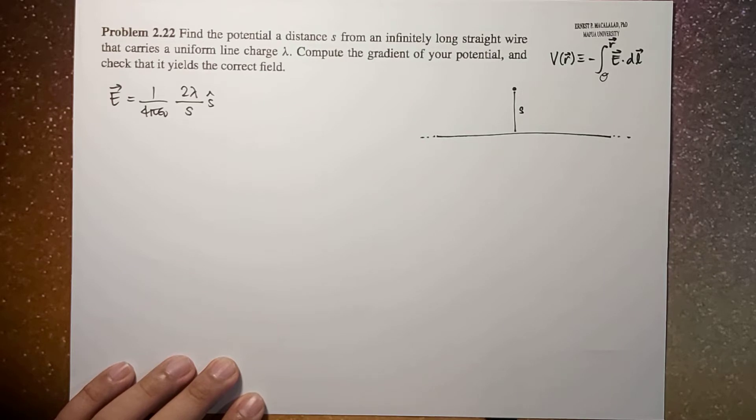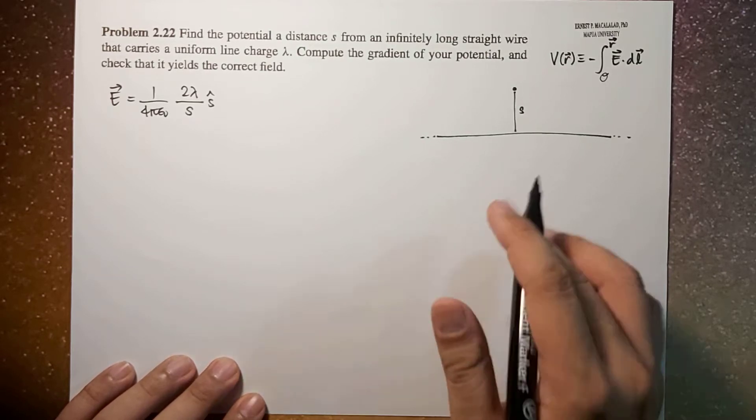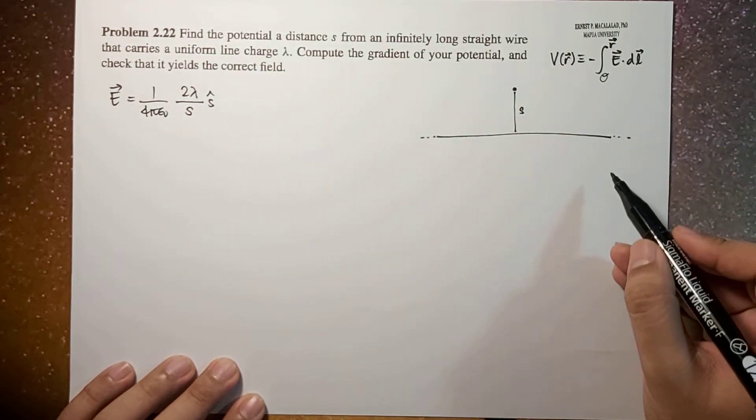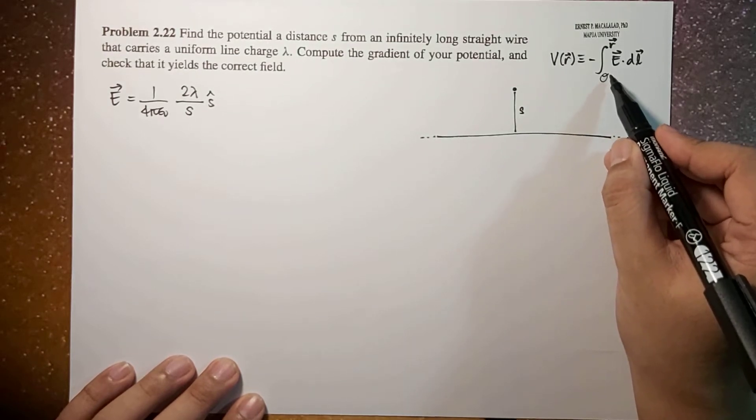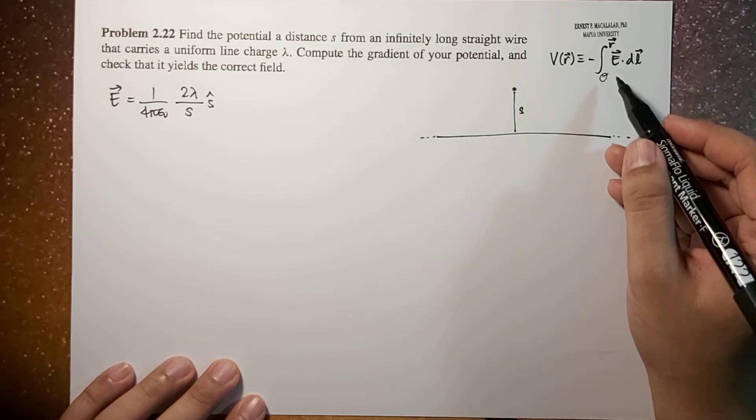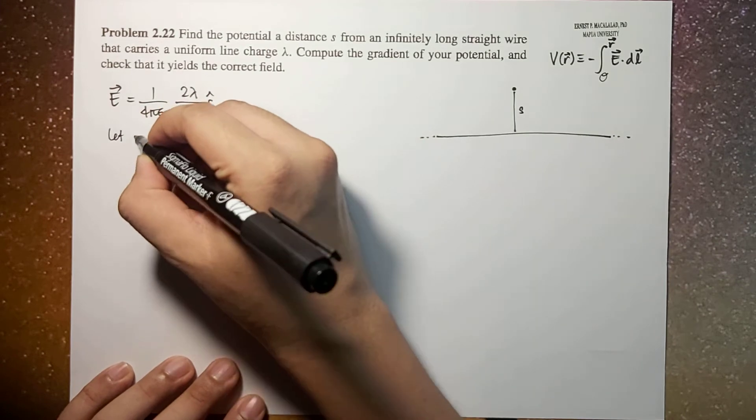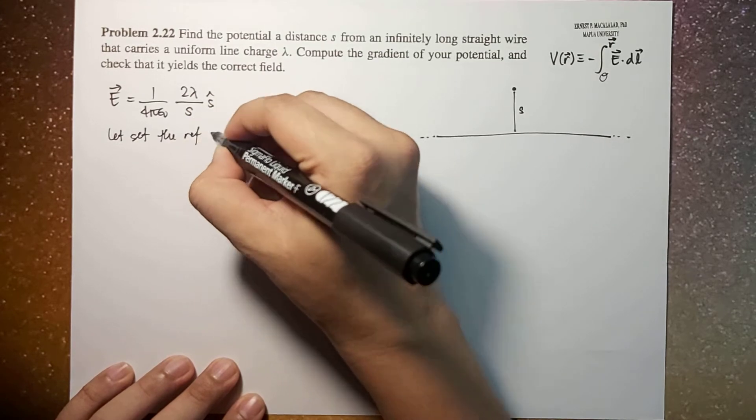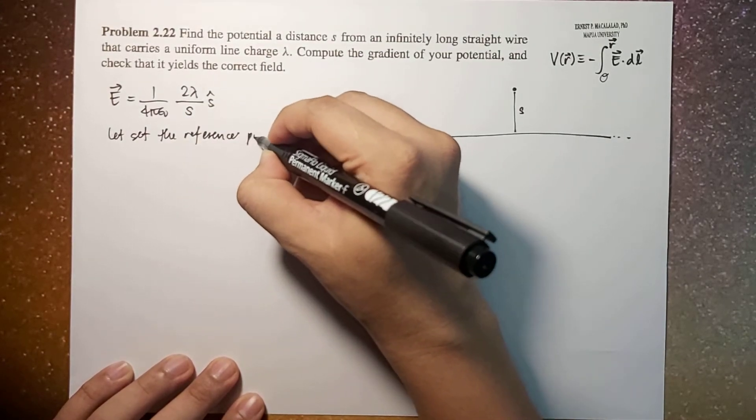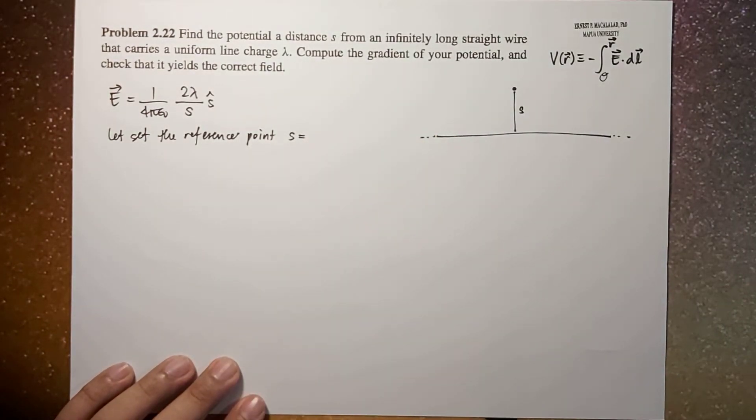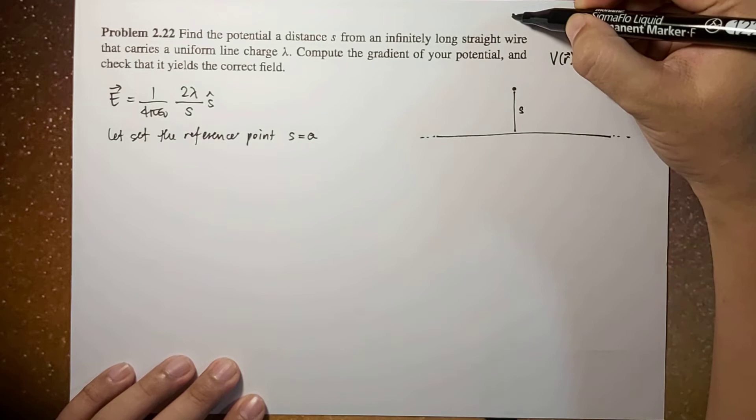Now since the line extends to infinity, definitely we cannot use infinity as our reference point, which we're going to show mathematically later. Now let's say we set our reference point to be at some distance and let's call it letter a.